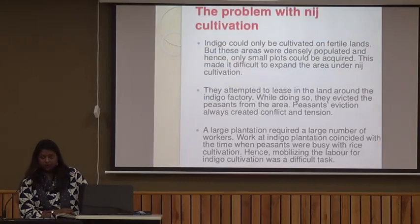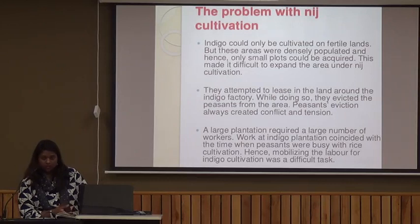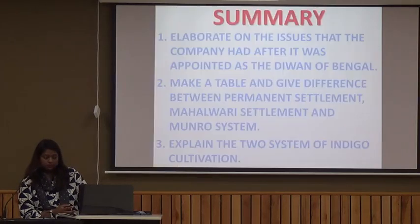In this chapter, we have studied how the company became Diwan, the three revenue systems, and also the Indigo system — the two methods of cultivation and the problems associated with cultivation. You all have to do these questions at home. Thank you.